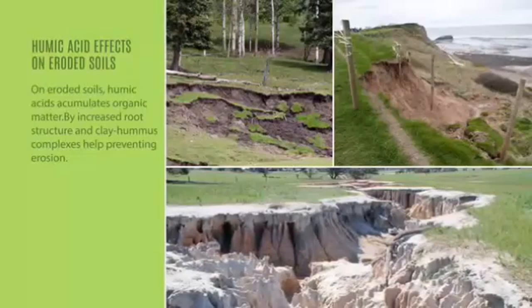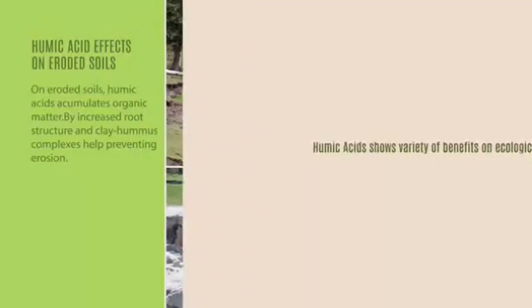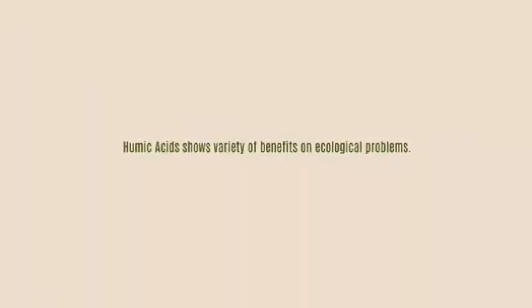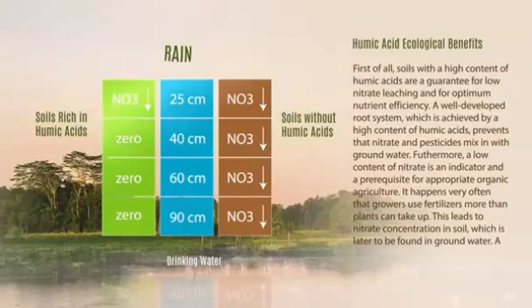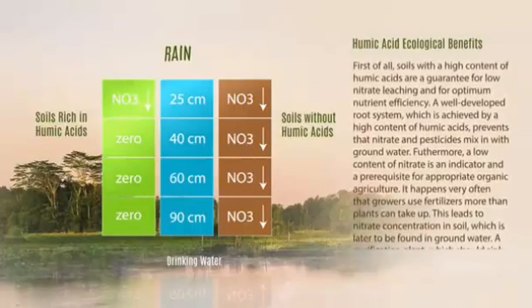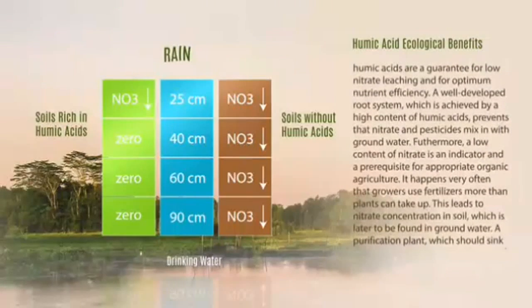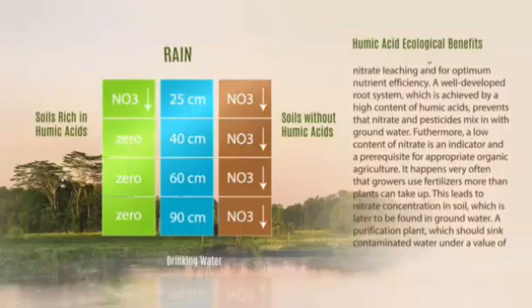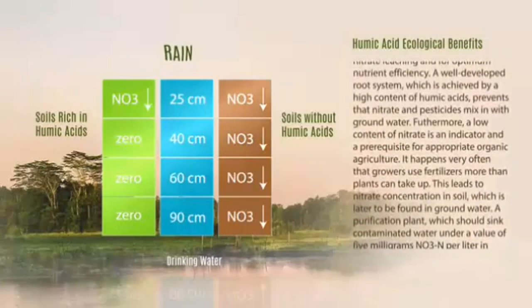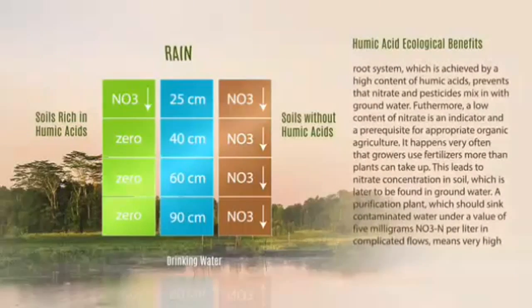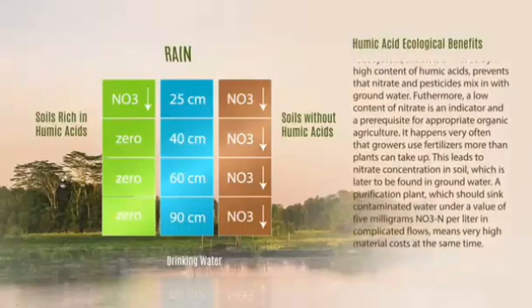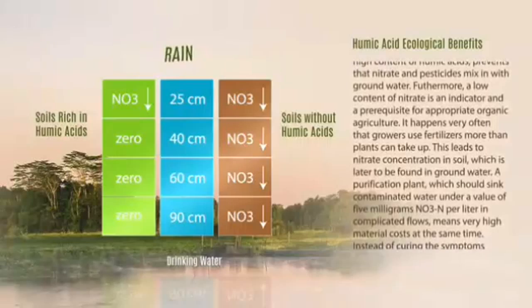Humic acids show various ecological benefits. The ecological benefits are diverse and present profitable and effective solutions for environmental problems and preservation of the environment. Soils with a high content of humic acids guarantee low nitrate leaching and optimum nutrient efficiency. A well-developed root system, achieved by a high content of humic acids, prevents nitrate and pesticides from mixing into groundwater. Furthermore, a low content of nitrate is a prerequisite for appropriate organic agriculture.